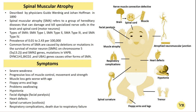SMA is primarily caused by mutations in the Survival Motor Neuron 1, that is the SMN1 gene, though other genes can also be involved, contributing to different types and severity of SMA. The SMN1 gene is located on the long arm of chromosome 5 at position 5q13, and consists of 9 exons. The gene size is approximately 20 KB, encoding a protein of 294 amino acids.